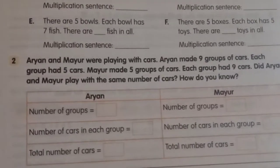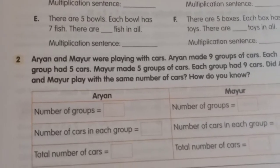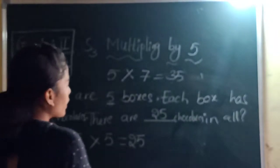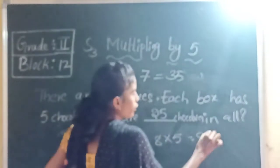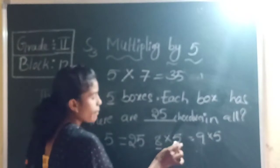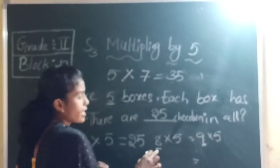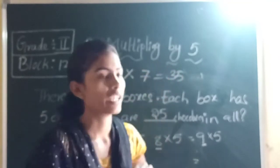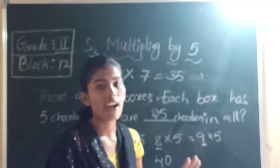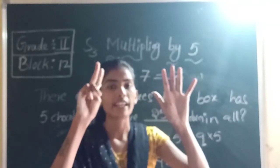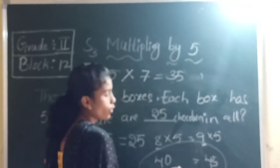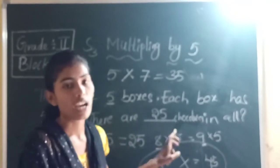Did Aryan and Mayur play with the same number of coins? Write multiplication sentences for both. For Aryan: 9 into 5. For Mayur: 5 into 9. Skip 5 eight times gives 40; skip 5 nine times gives 45. The answers are 40 and 45 — they are not the same. So the answer is no.